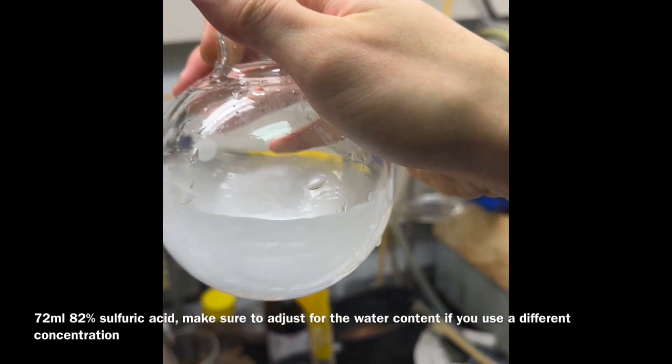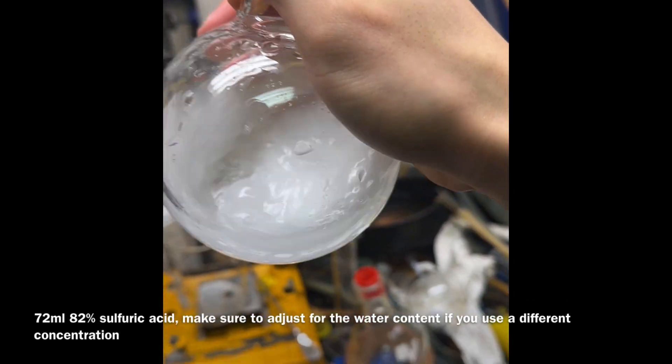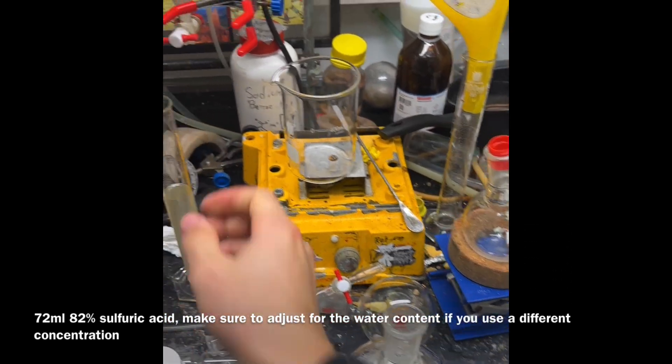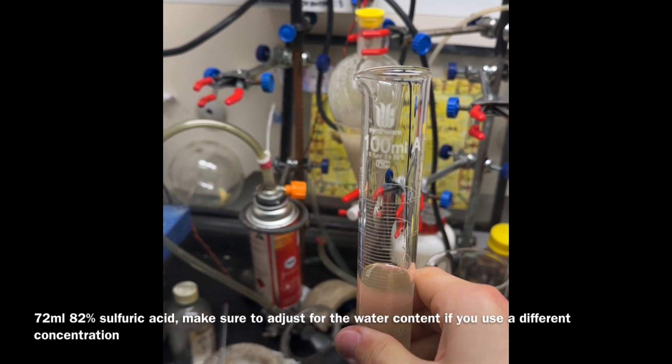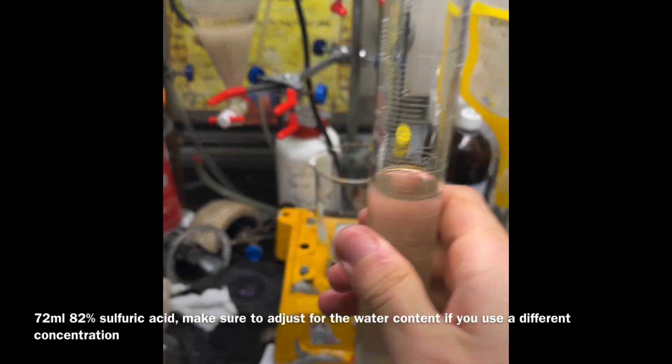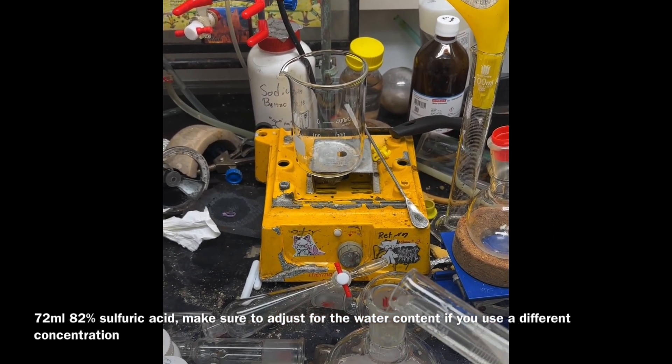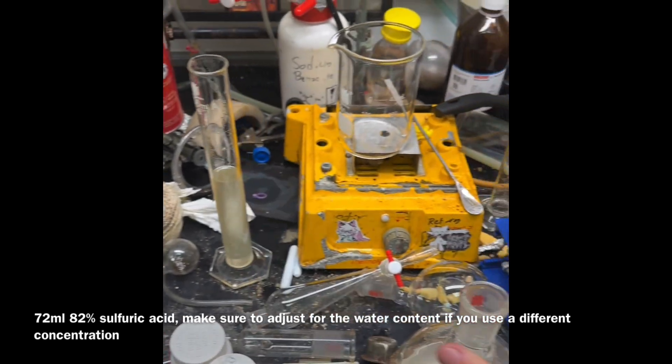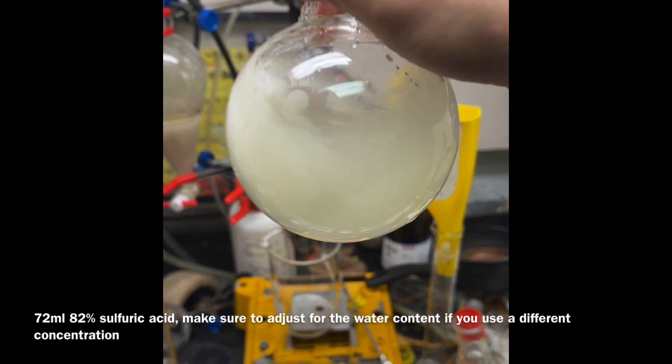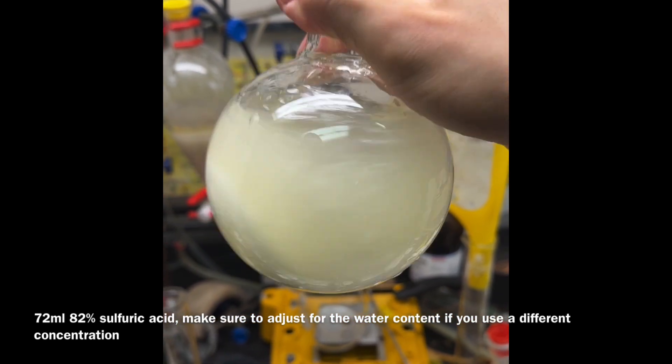Here's 74 milliliters of 82% sulfuric acid, because that's what I have. You can just pour it in like that. Yes, it will make a little bromide but it's not much, it really does not matter.